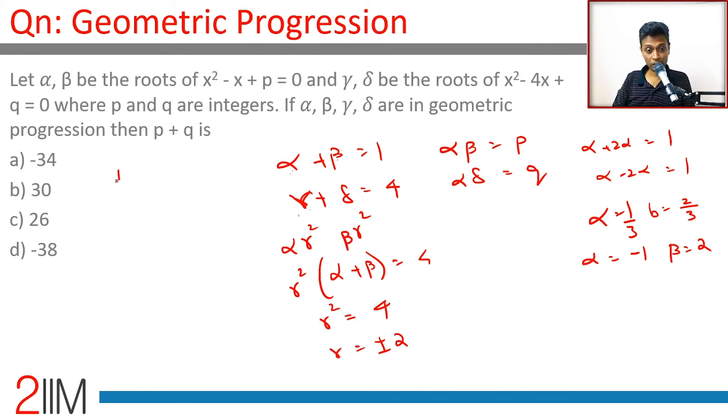So we have a geometric progression starting 1 by 3, 2 by 3, 4 by 3, 8 by 3. Or we have minus 1, 2, minus 4, 8. These are the two possibilities.